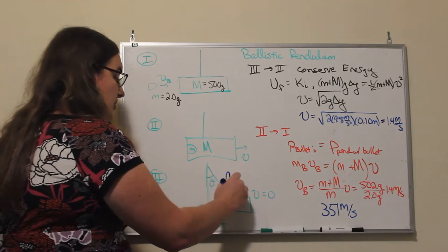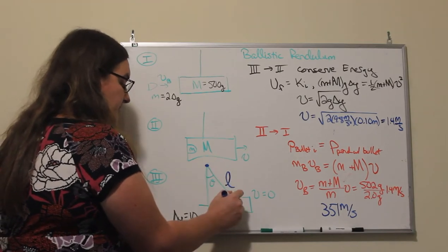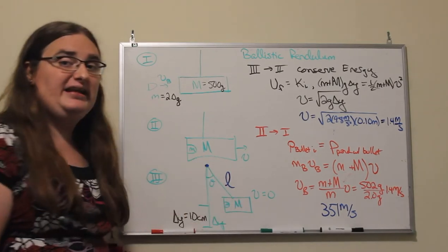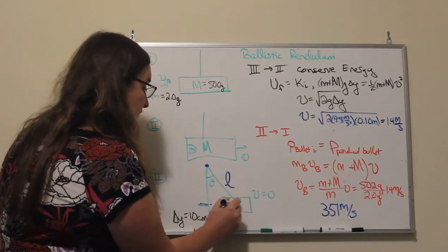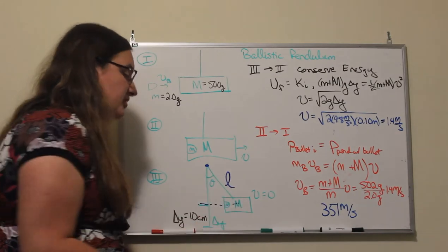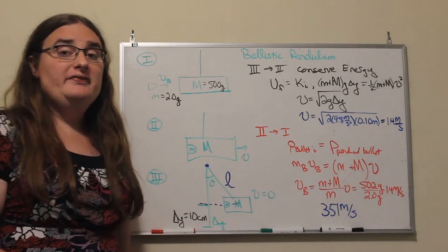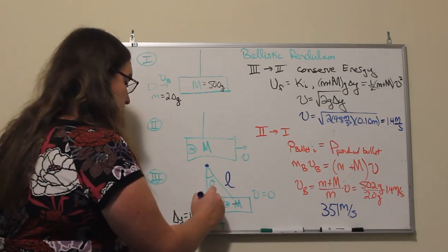We could also be given the length of the pendulum and have a way of measuring the angle, because if we want to find this change in y from that piece, well, the length of the pendulum forms the hypotenuse of a right triangle.